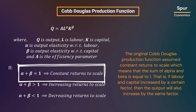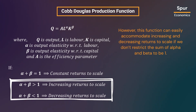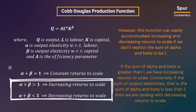The original Cobb-Douglas production function assumed constant returns to scale, which means that the sum of alpha and beta is equal to one — that is, if labor and capital increase by a certain factor, then the output will also increase by the same factor. However, this function can easily accommodate increasing and decreasing returns to scale if we don't restrict the sum of alpha and beta to be one. If the sum of alpha and beta is greater than one, we have increasing returns to scale. Conversely, if the sum of alpha and beta is less than one, we are dealing with decreasing returns to scale.